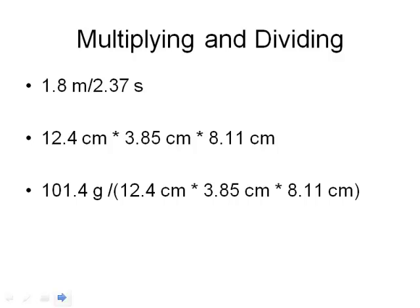So when I put this into my calculator, it's going to give me a value of 0.759493670886. And the units here, I have meters in the numerator, seconds in the denominator, so that's meters per second. That's the number that my calculator has given me. But what I need to do is I need to look at the number of significant digits in the original problem. So 1.8 meters, that's two digits. And 2.37 seconds, that's three digits.